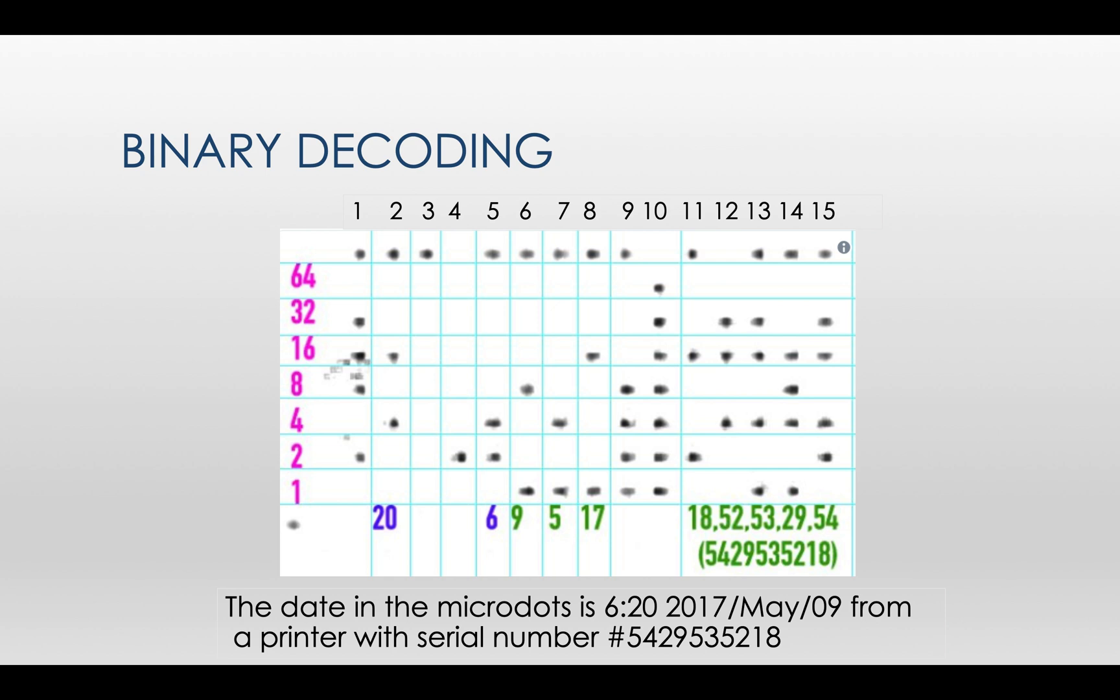Each row represents a value to the power of 2. For instance, the second row in this picture represents 64, which is 2 to the sixth power. The next row is 32, which is 2 to the fifth power, and so on.